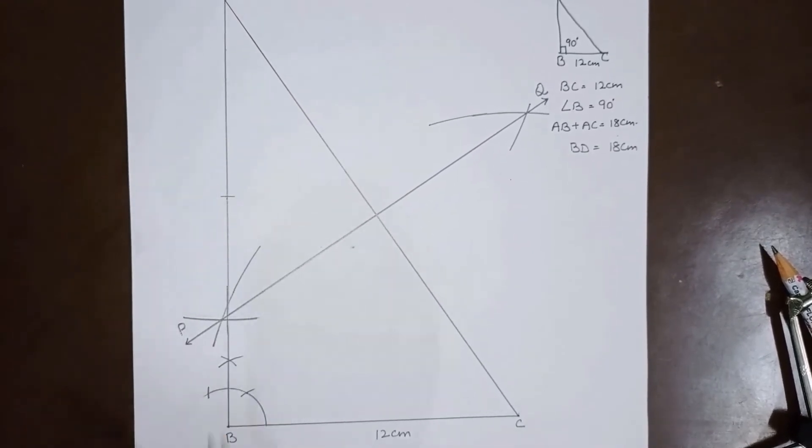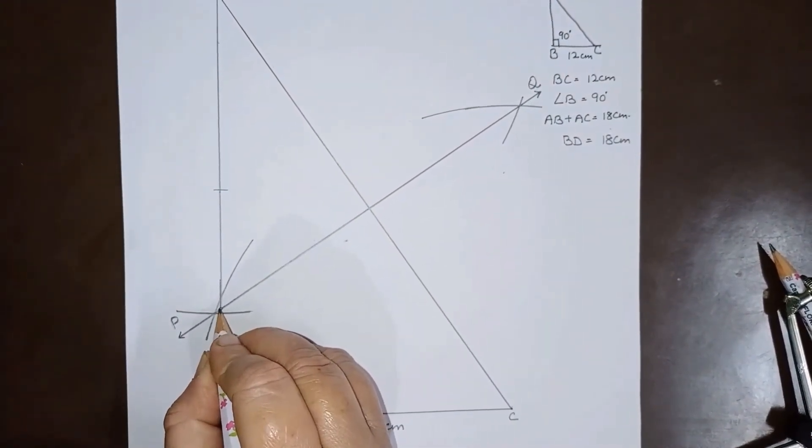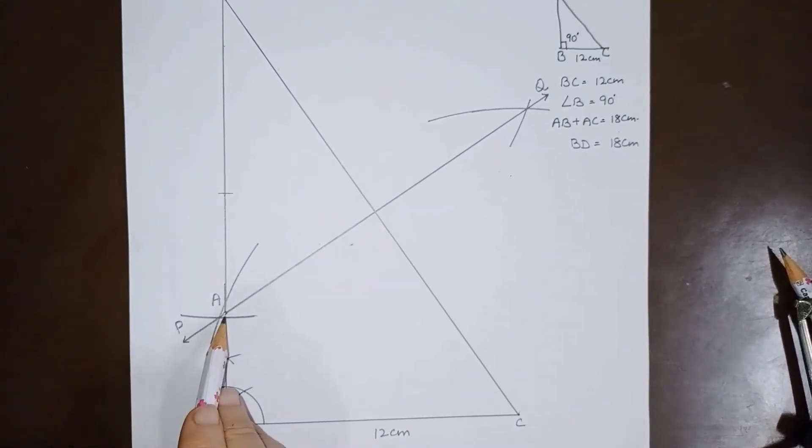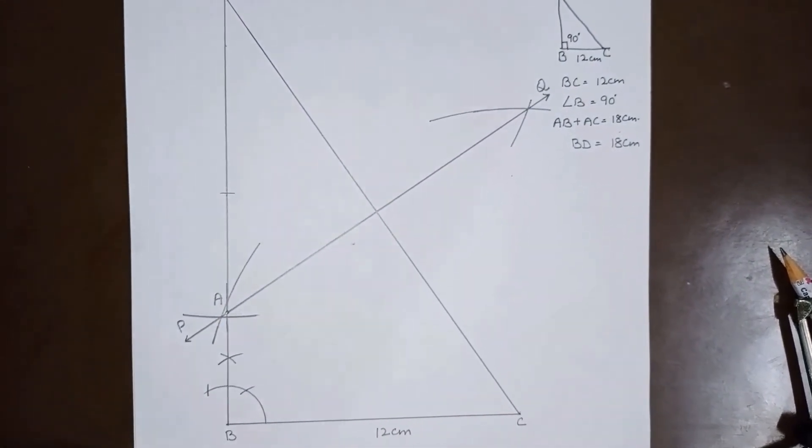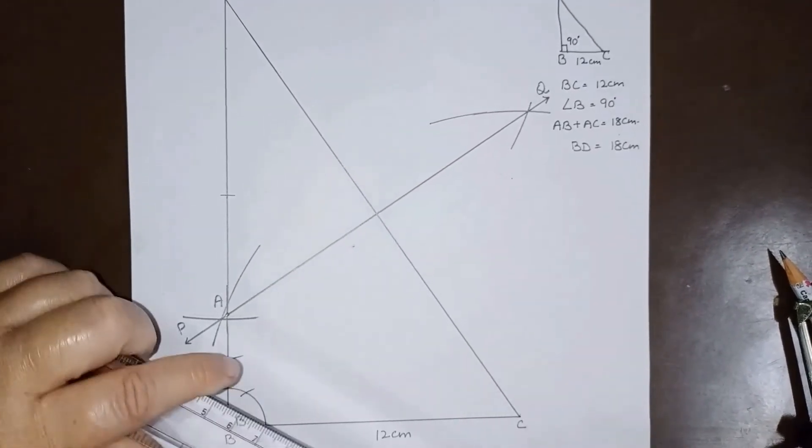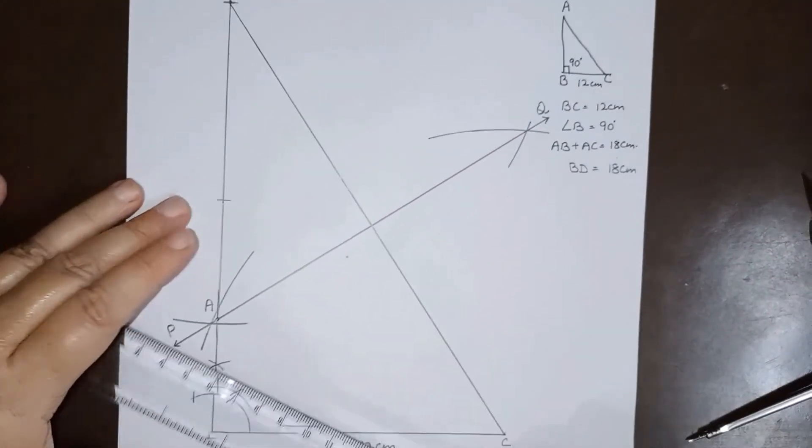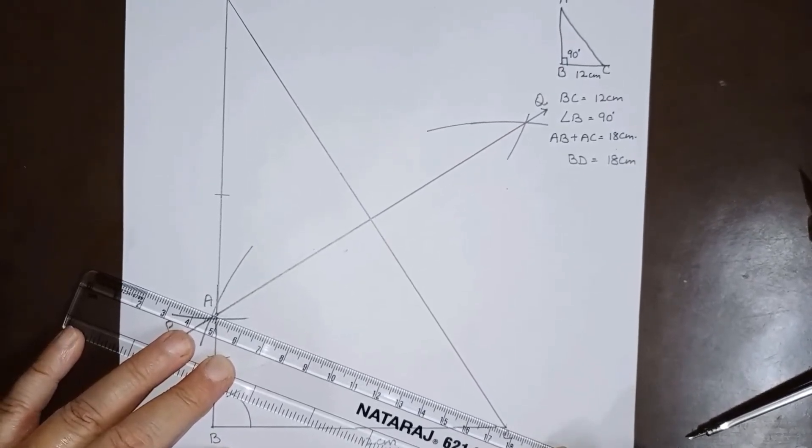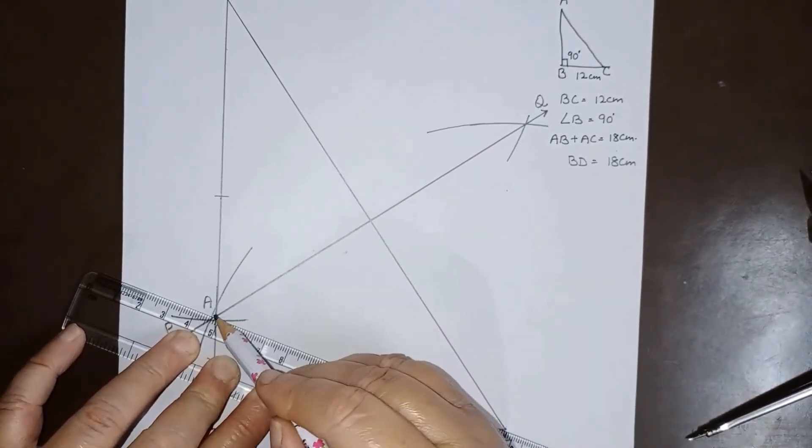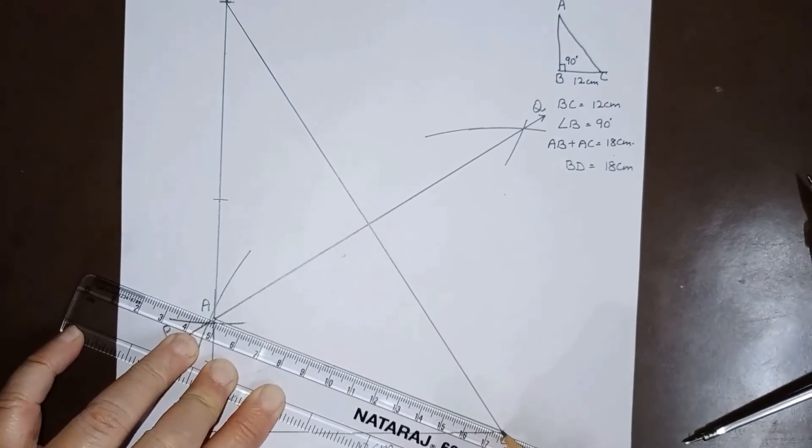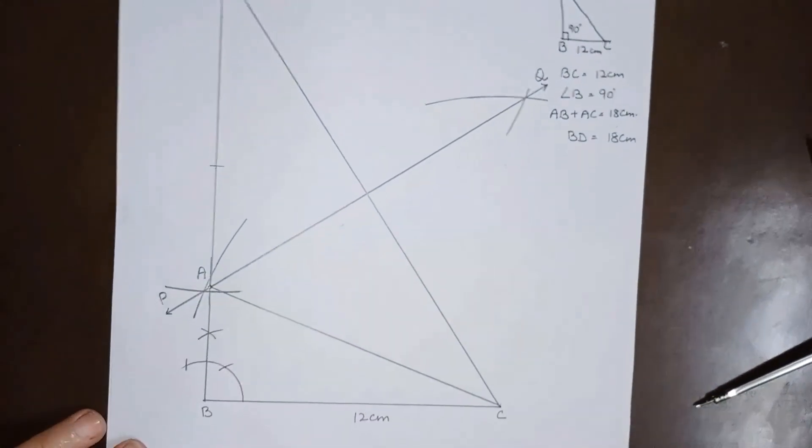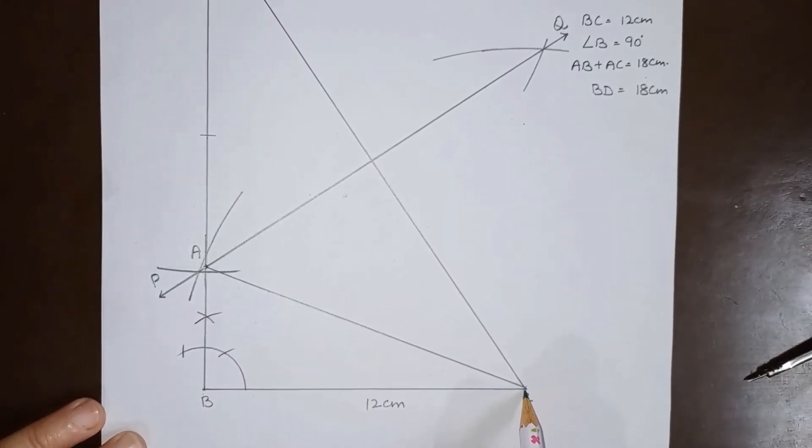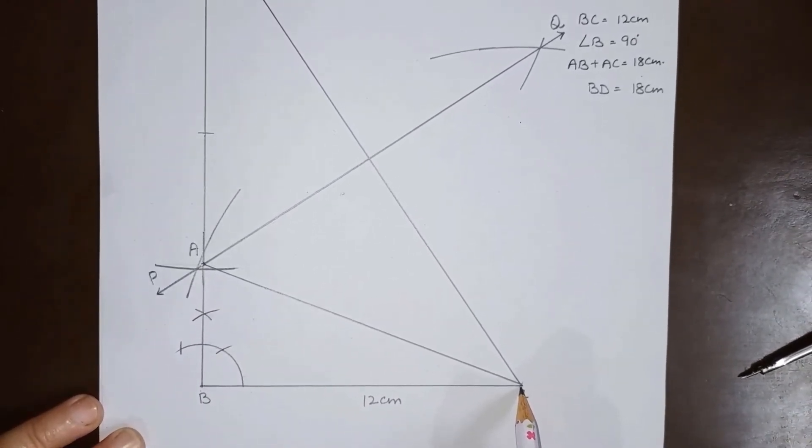Now, this perpendicular bisector is intersecting BC at point A at this point. Now we will join AC. Let us join this AC. This triangle A, B, C is your required triangle.